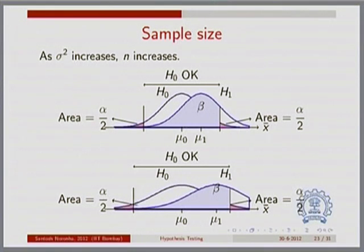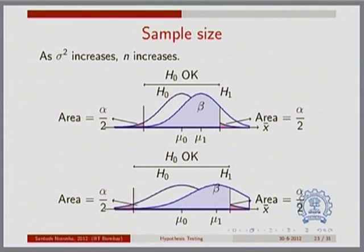We saw this indirectly when we looked at random variables — we said that if we sample more and more we will be able to minimize the thickness of a distribution. A normal distribution with variance sigma² over n: if you start increasing n, then sigma² over n will decrease, which means your curves are getting thinner and thinner, being centered practically as a spike around the mean value mu.